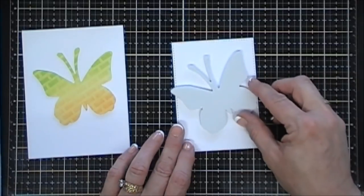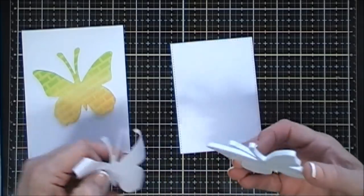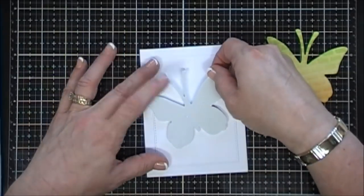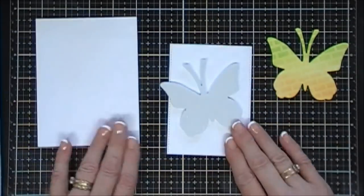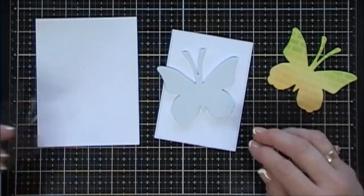Okay, now I cut out a panel that's three and a half inches by four and three quarters. I'm actually going to place it on my card base and then I'm going to stick down my butterfly. This way I know where to place it. I wanted it overhanging just a bit.